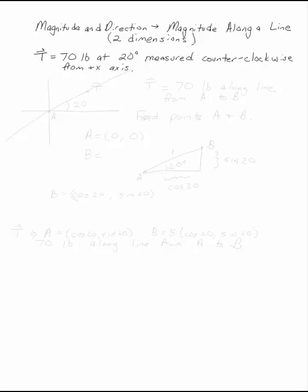T is a vector of 70 pounds at 20 degrees measured counterclockwise from the x-axis. First, sketch yourself a notion of what you're talking about. T looks like this.